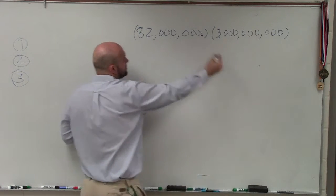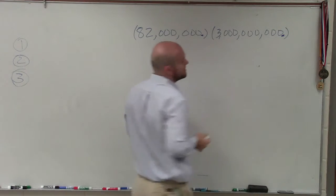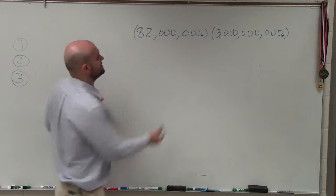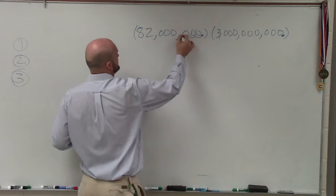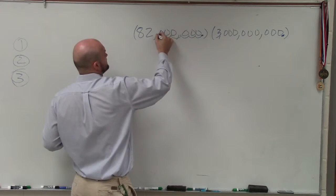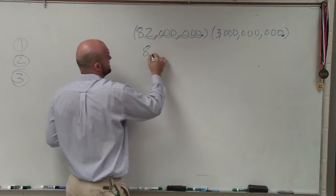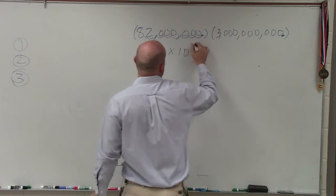When we write these in scientific notation, I need to move my decimal point over 1, 2, 3, 4, 5, 6, 7. So I have 8.2 times 10 to the seventh.